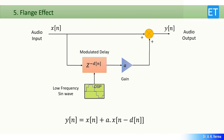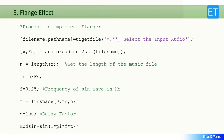This variable delay in the flange effect is created using a low-frequency sine wave. So instead of a constant delay d, there is a delay that varies according to the shape of a sine wave — it increases and then decreases. You can also adjust the depth of the effect. Let's see the program.